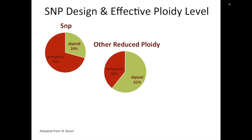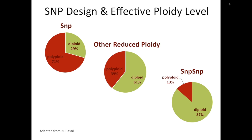That approach was obviously successful compared to just the random approach of designing SNPs to find diploid SNPs. But there was a third approach that was surprisingly effective, and that was what is called the SNP-SNP approach to SNP design, where 80 percent of SNPs that were designed turned out to be segregating or scored in a diploid manner.